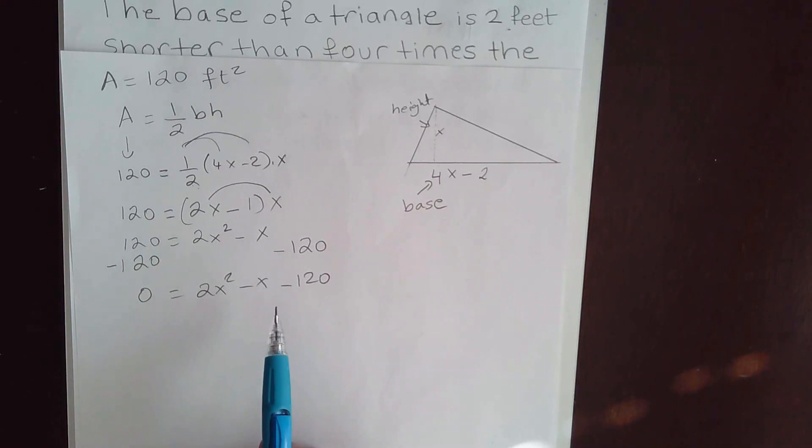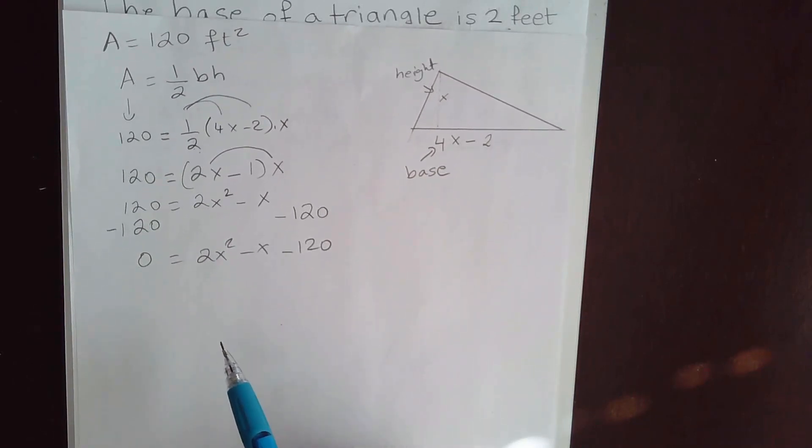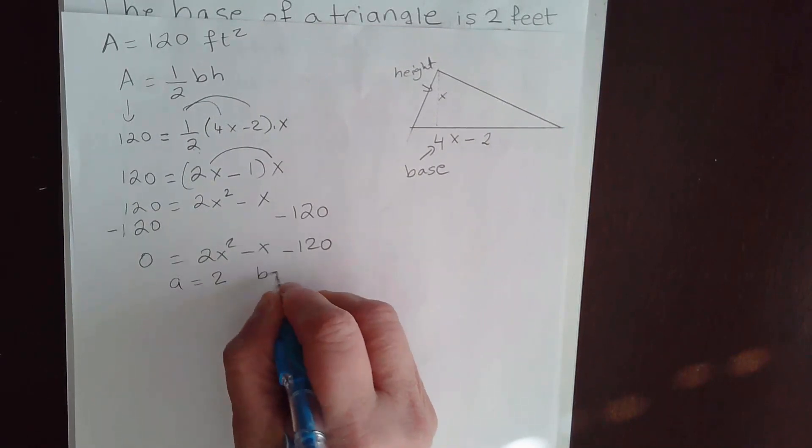Looking at it, you can try to factor it, but this is a little bit larger and this is not 1. What I'm going to do is I'm going to go ahead and use the quadratic formula. What do I have? I have A is equal to 2, B is negative 1, and C is negative 120.